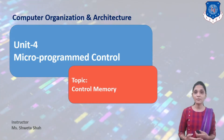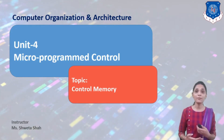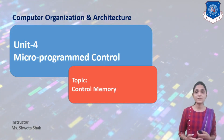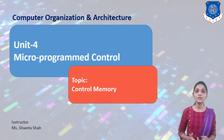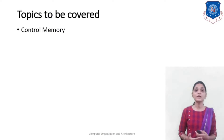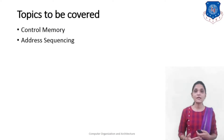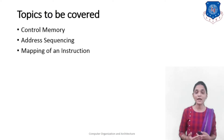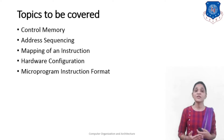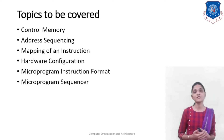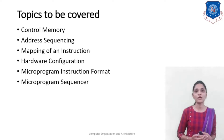In this unit we are basically going to see how the micro-operations are generated for your particular instruction. The outlines are: first we will see the control memory, then we will see the address sequencing and mapping of the instruction, then we will see the hardware configuration for your computer, then we will see the Micro-Program instruction format, and lastly we will see the Micro-Program sequence.